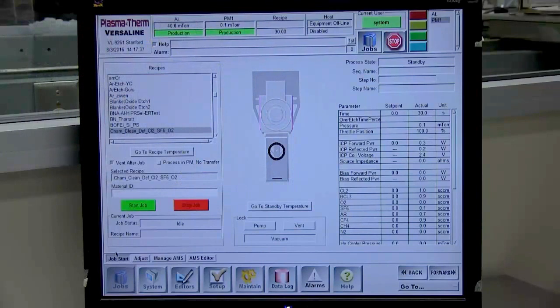After the recipe is selected, click on the Go To Recipe Temperature button. This will set the tool to the temperature required for the recipe.